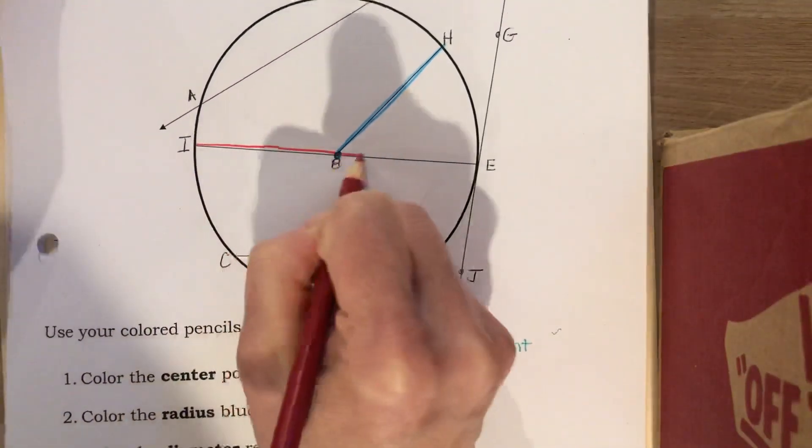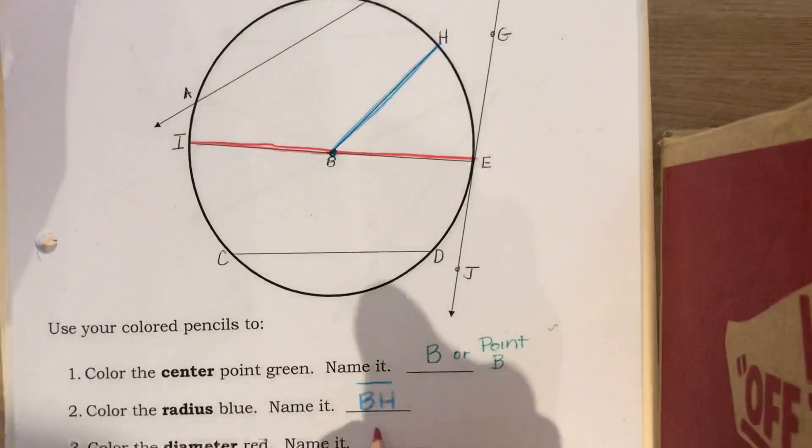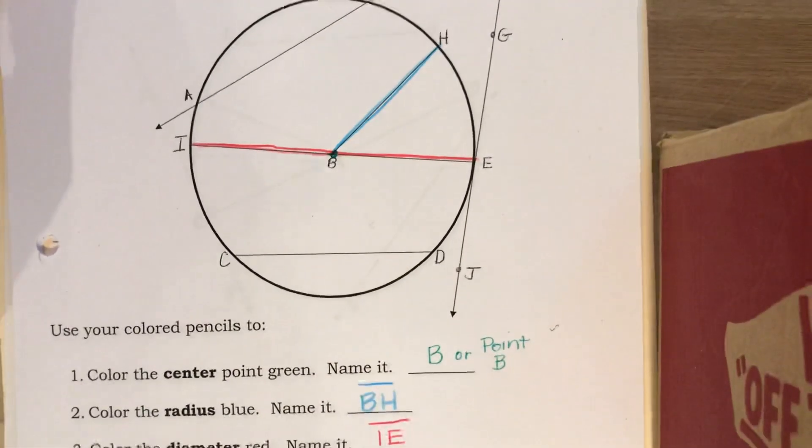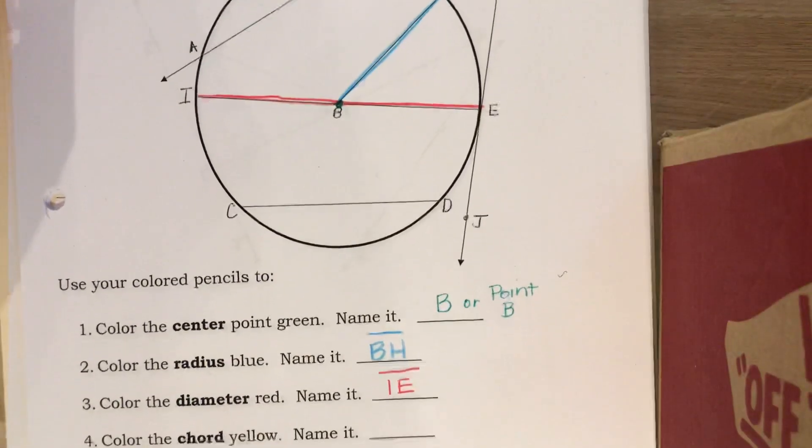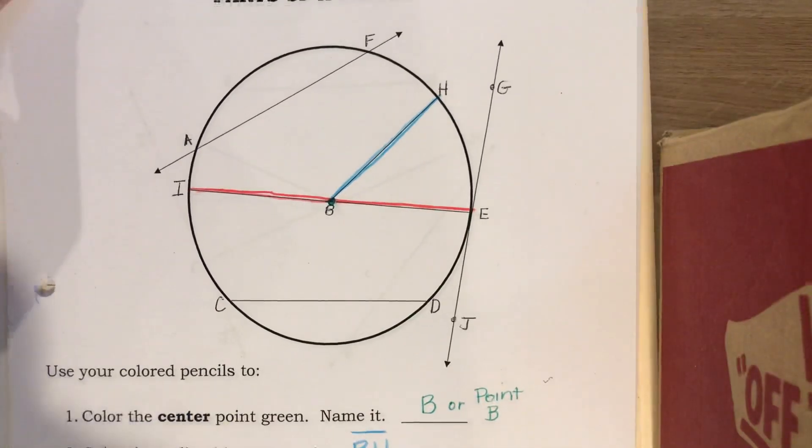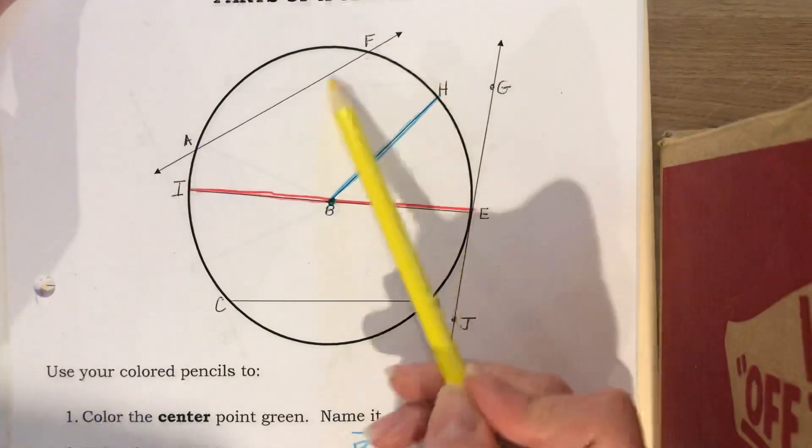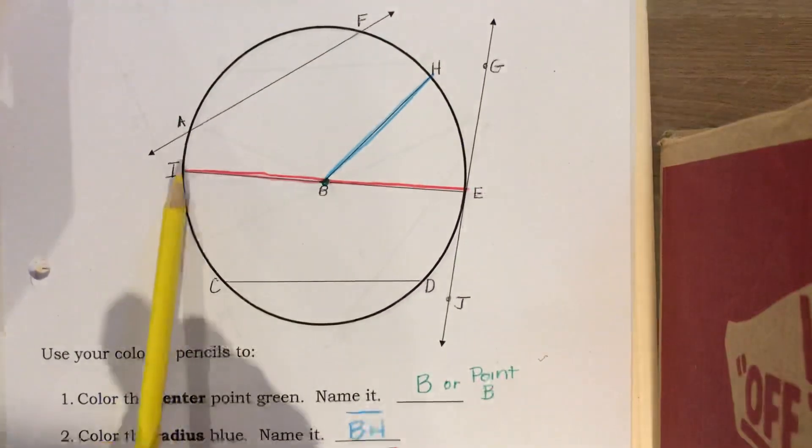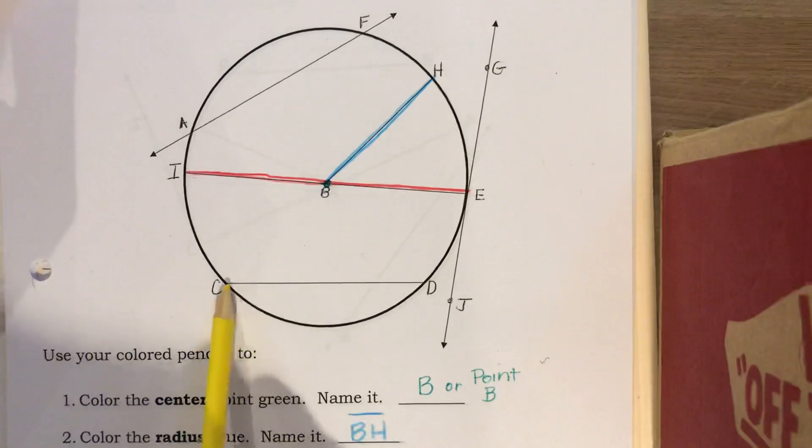Next we have to color the chord yellow. Let's take a look at our picture. A chord is a segment. If I look up here, I see arrows at the end and I say, well, that's a line.